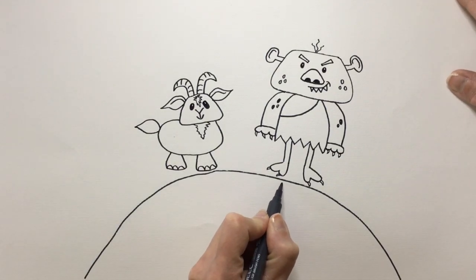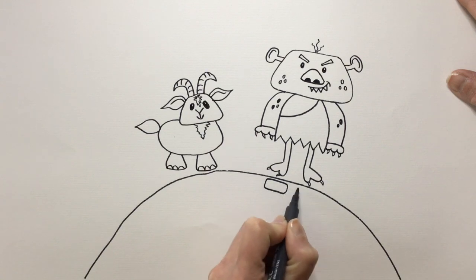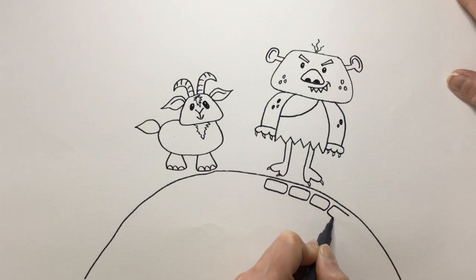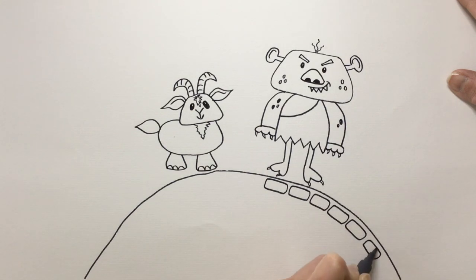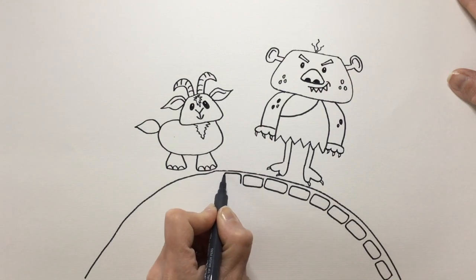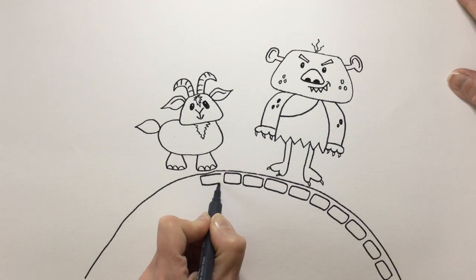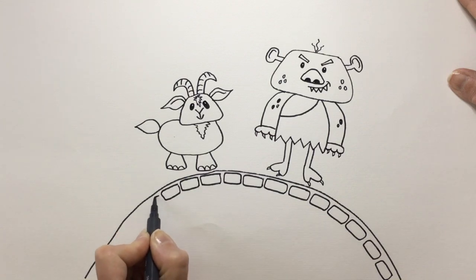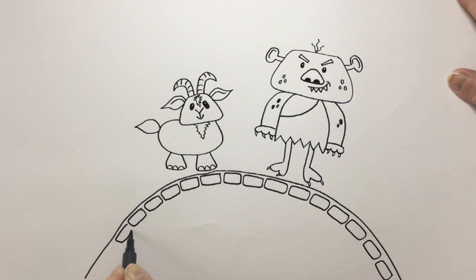Now the bridge is made of bricks. So I'm going to draw lots and lots of rectangles going across. Going across my bridge. Now follow that rainbow shape that I've drawn to show me where to put my bricks. We'll go the other way. I start in the middle so I know they're all going to fit in. And going this way.